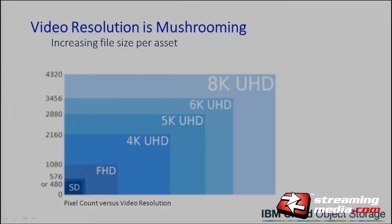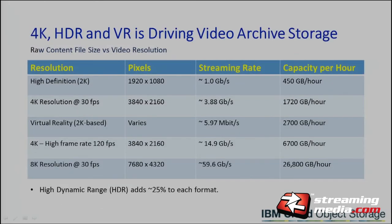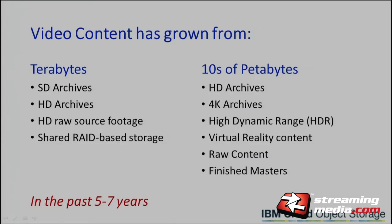Just to hit the point again — if you look at the relative file sizes between 4K, 6K (which ARRI and RED are now generating), and 8K — IBM demonstrated an 8K editing system at the IBC show. The capacity per hour for high definition is 450 gigabytes raw. For 8K resolution at 30 frames, it's 26,800 gigabytes per hour — we're getting to terabytes per hour with 8K. Even 4K resolution is 1.7 terabytes per hour. We've gone from terabytes to tens of petabytes in the past 5 to 7 years.